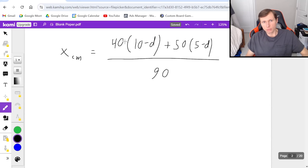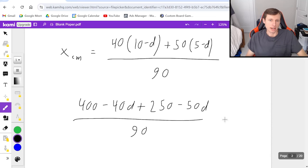And if I reduce this and I try and distribute as much as I can, I'm going to get 40 times 10, 400 minus 40d plus 50 times 5, 250 minus 50d divided by 90. And remember, the center of mass is conserved because we're on water. So this is going to equal 2.78, the same 2.78 from before.